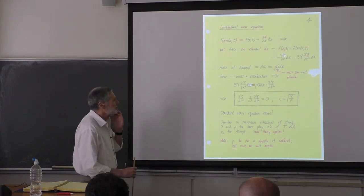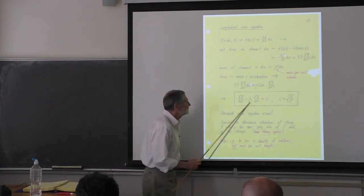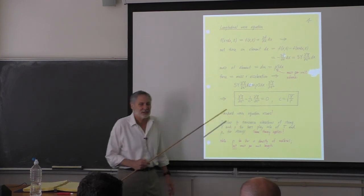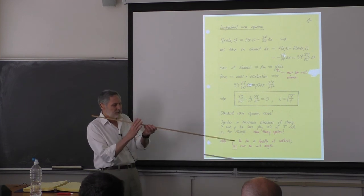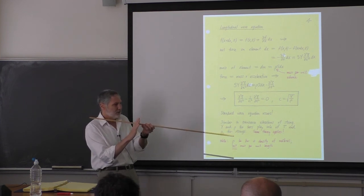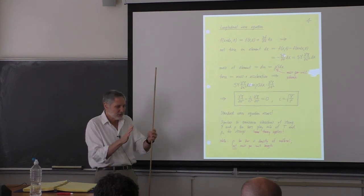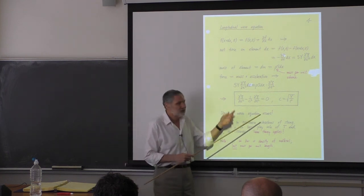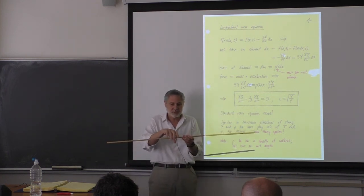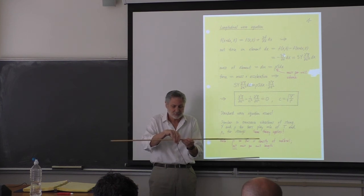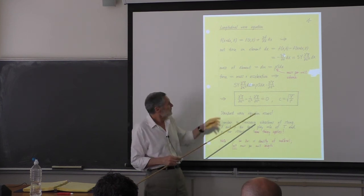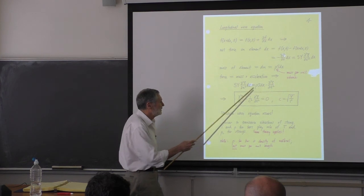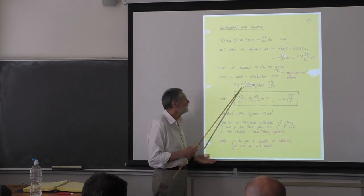Where's the cross-sectional area? It cancels out. If we double the cross-sectional area, we double the force due to a strain, but we've also got twice the inertia. The force is proportional to cross-sectional area, but the mass is also proportional to cross-sectional area, so Newton's second law tells us they cancel.